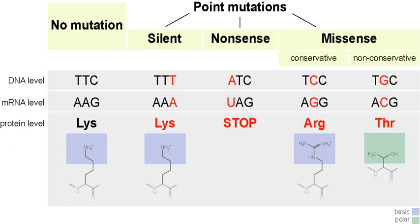Non-conservative mutations result in an amino acid change that has different properties than the wild type. The protein may lose its function, which can result in a disease in the organism. For example, sickle cell disease is caused by a single-point mutation in the beta-hemoglobin gene that converts a GAG codon into GUG, encoding valine rather than glutamic acid. The protein may also exhibit a gain of function, such as the mutation changing valine to glutamic acid in the BRAF gene, leading to activation of the RAF protein and unlimited proliferative signaling in cancer cells.